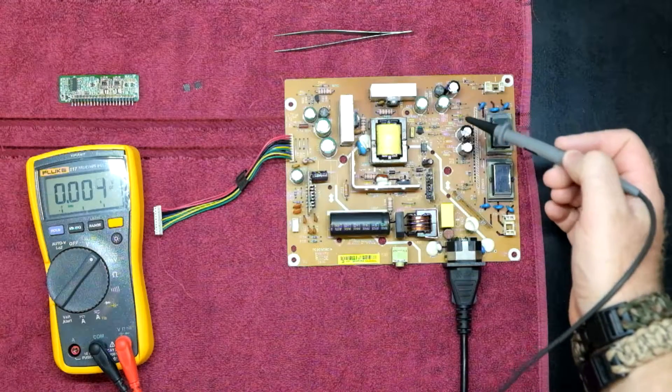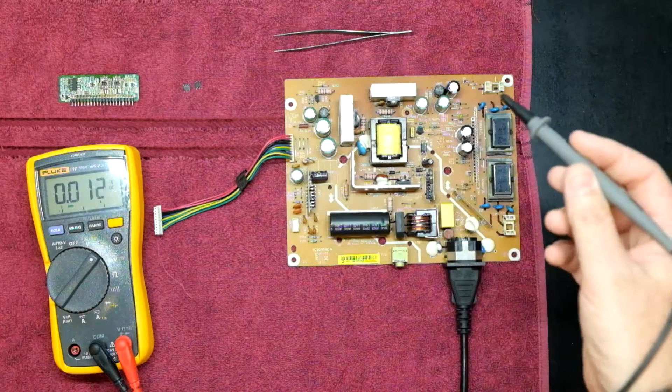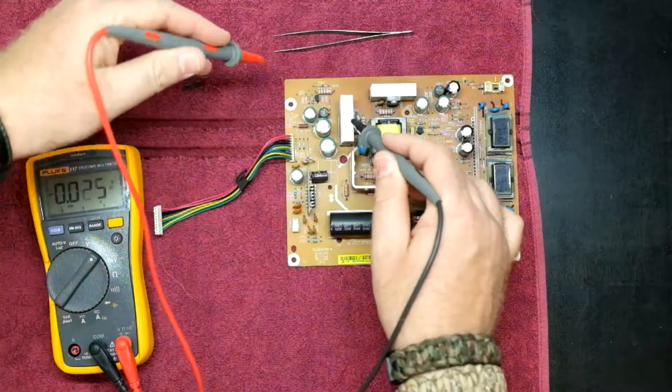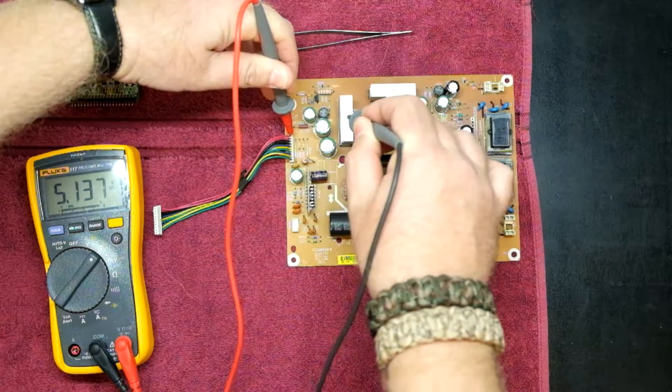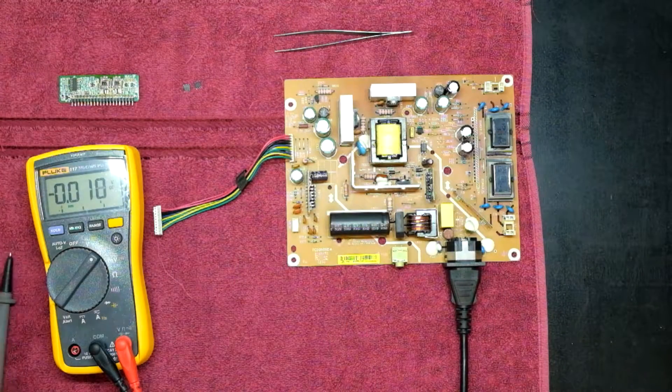These were also all checked, they're all fine. After doing that, on the five volt rail you'll see we're getting 5.137 volts out from the power supply, but we've got no backlight.